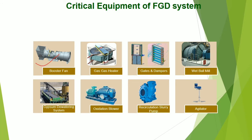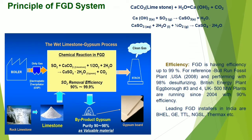Components used in FGD: booster fan for boosting the flue gases, gas-to-gas heater to regain moisture, gates and dampers, wet ball mills for crushing, gypsum dewatering system for dewatering of gypsum, oxidation blower, recirculation pump, agitator, etc.